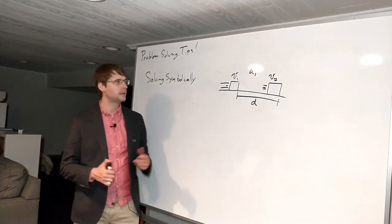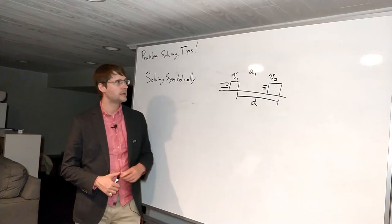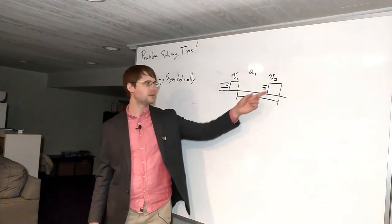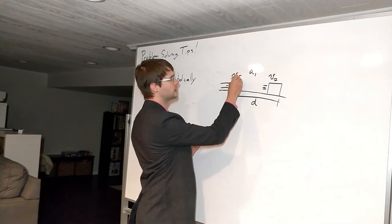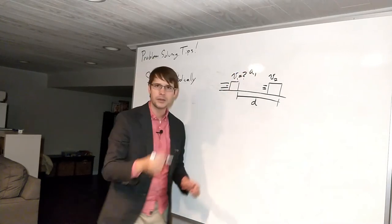In this case we were given all of these but let's say that we were given the acceleration, the final velocity and the distance, but we wanted to know what was the initial velocity. This is considered an unknown in this case.